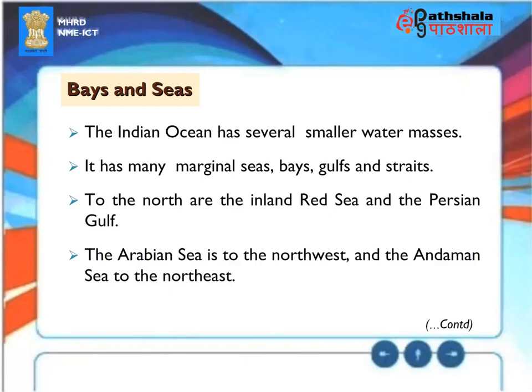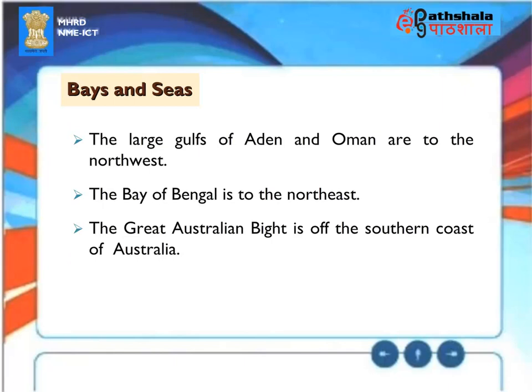Bays and Seas. The Indian Ocean has several smaller water masses. It has many marginal seas, bays, gulfs, and straits. To the north are the Inland Red Sea and the Persian Gulf. The Arabian Sea is to the northwest, and the Andaman Sea to the northeast. The large gulfs of Aden and Oman are to the northwest. The Bay of Bengal is to the northeast. The Great Australian Bight is off the southern coast of Australia.